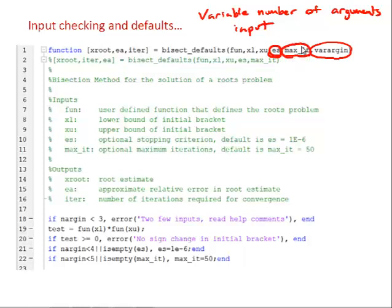The function will still run even if there's any number of inputs once we include the VARARGIN variable in that input list. So I've made some changes to the help comments, and now that we've included VARARGIN, let's look at some if statements we've added to incorporate the defaults and check some errors on the input.